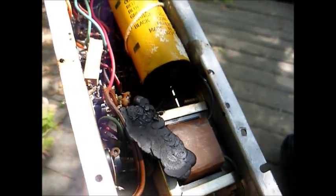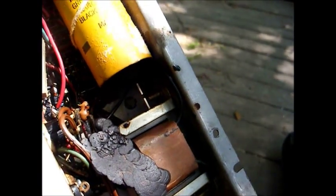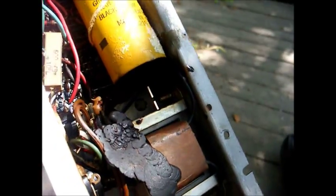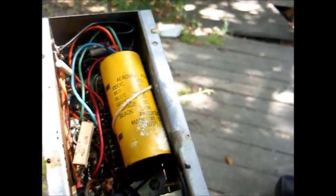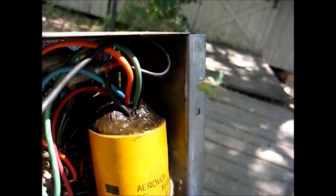Here's the underside of the amplifier chassis with a big blob of melty wax there. Here's our filter capacitor that you can see the end is kind of swollen and blown out.